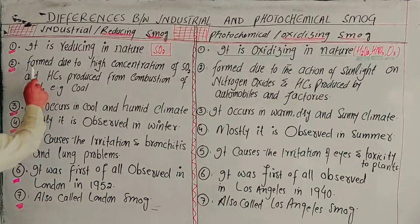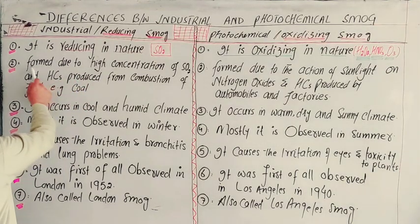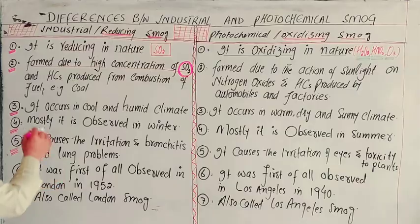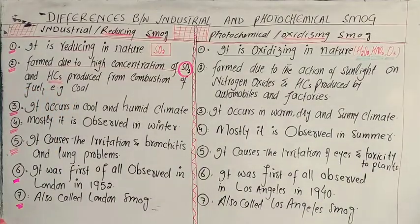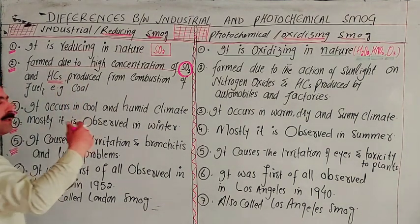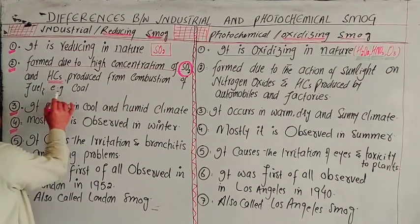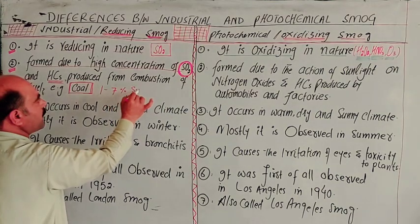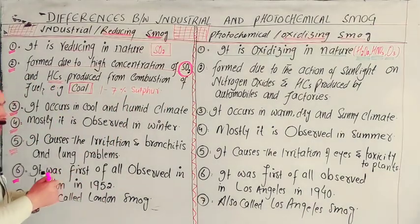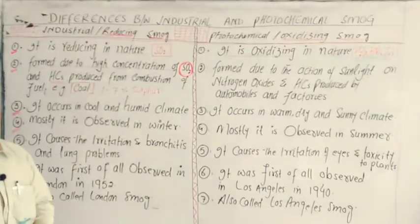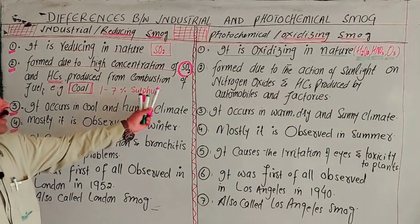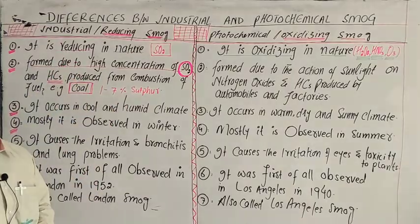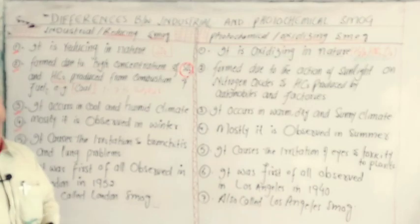The second difference: industrial smoke is formed due to a high concentration of SO2. The sulfur dioxide concentration is high. It is produced from combustion of fuel, mainly coal. Coal combustion produces SO2 because of its sulfur content, and hydrocarbons are also released. So coal combustion is the main source for industrial smoke formation.